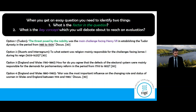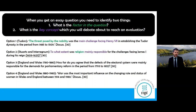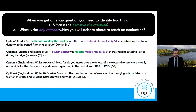The second example from the Stuart and Interregnum period: 'To what extent was religion mainly responsible for the challenges facing James I during his reign between 1603 and 1625?' The factor would be religion, and our key concept is to what extent was it mainly responsible for the challenges. You'd talk about religion as one challenge but also other things, comparing how responsible they were in comparison to religion. Again, underline that time period.